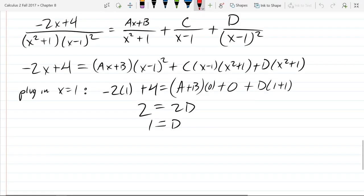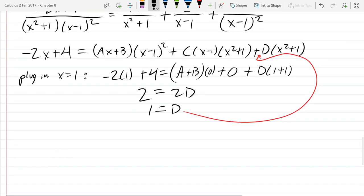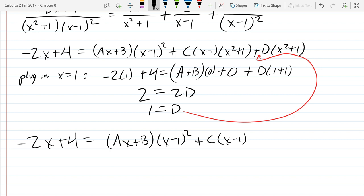All right, so we got our coefficient D. What I'm going to do is plug D back in. So D appears in one spot, which is right there. So I'm going to plug this value in for D. All right, so D is 1, so that last term just becomes X squared plus 1.